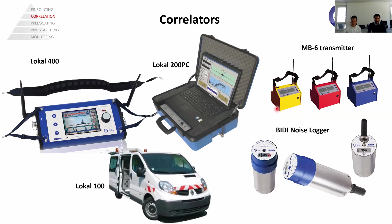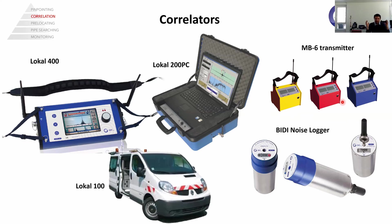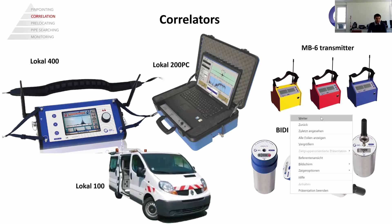For example, if you have the yellow, red, and blue MB-6, you can have three points and you can correlate always two signals between two boxes. The noise loggers, of course, allow as many loggers as you want to join in a group of correlation in order to calculate the correlation.